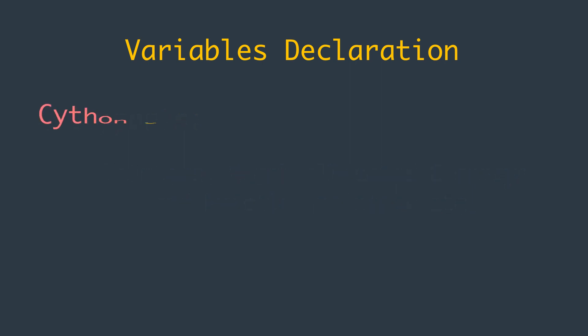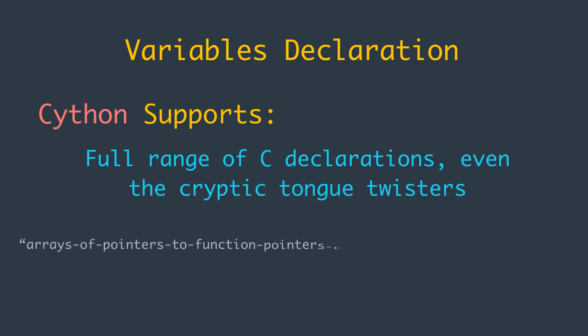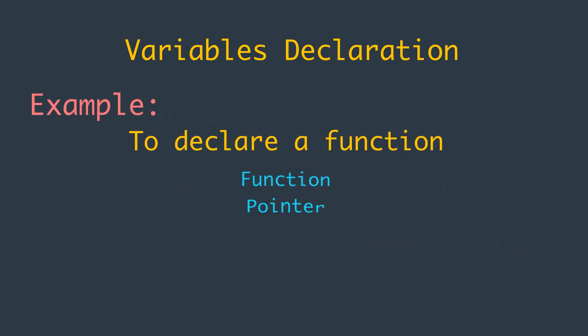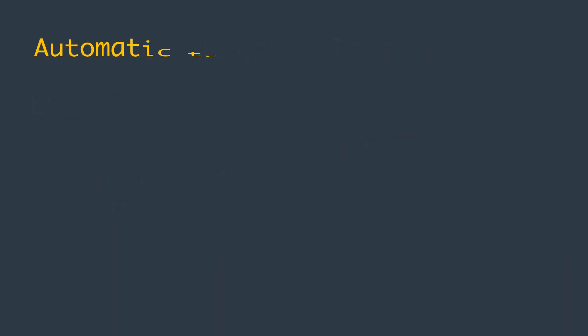Cython supports the full range of C declarations, even the cryptic tongue-twisters like arrays of pointers to function pointers that return function pointers. For example, to declare a function that takes a function pointer as its only argument and returns another function pointer, we could write: cdef int (*(*func_ptr)(int (*)(int)))(int). We will explore that in more detail in later videos of this series.